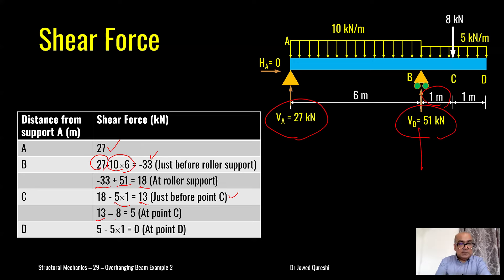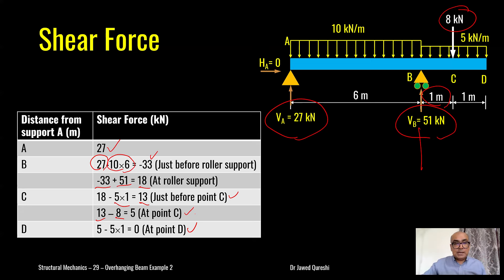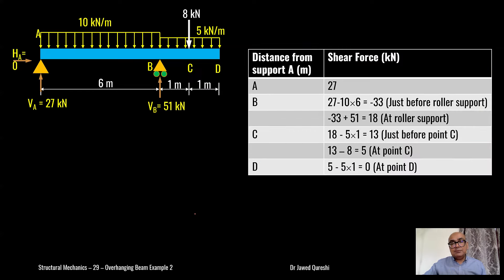At point C, including the point load: 13 minus 8 kilonewtons gives 5 kilonewtons. Then finally at point D all forces must equal zero. Once you've worked out these values it is time to plot them, which will give us the visual representation of the shear force diagram.